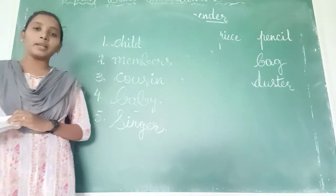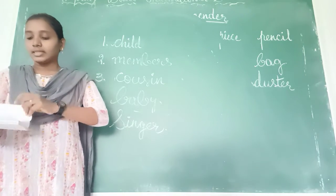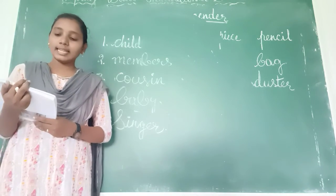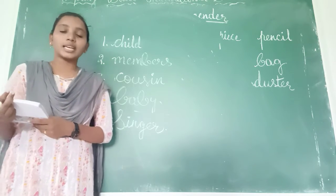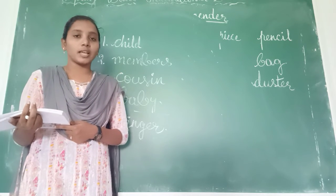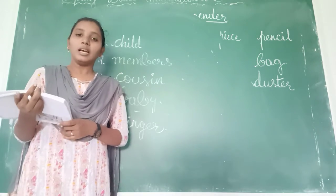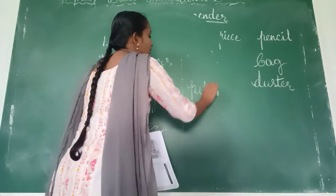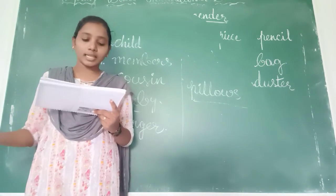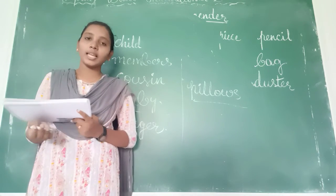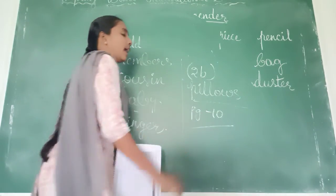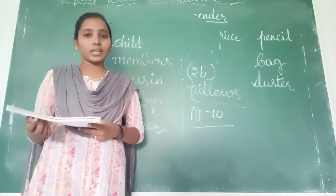I am giving you homework, children. Open your companion, 2B. Look at the given images and list the common and neuter gender nouns related to each. One is done for you — for example, pillow is neuter gender. You can write patient, doctor, bed, fruits, sheet. We have to write six. Complete companion 2B, page 10. That is your homework. We will complete the remaining text-fill exercises in the next class. Meet you in next class, children. Thank you.